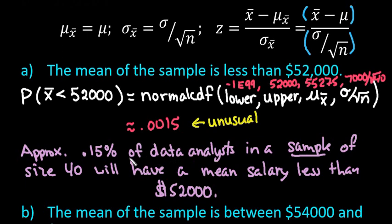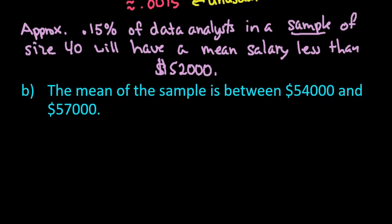If you take 40 salaries and find the average, the likelihood of that average being less than $52,000 is 0.15%, so it's not very likely at all. For the next problem I won't write out the full interpretation — you would just explain it in the way the question was asked.